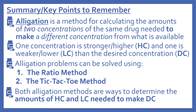Let's go over a summary and some key points to remember. Allegation is a method for calculating the amounts of two concentrations of the same drug needed to make a different concentration from what's available. One concentration is stronger or higher — HC — and one is weaker or lower — LC — than the desired concentration, which is DC. Allegation problems can be solved using the ratio method or the tic-tac-toe method — use the one that makes the most sense for you. Both methods determine the amounts of HC and LC needed to make the desired concentration.